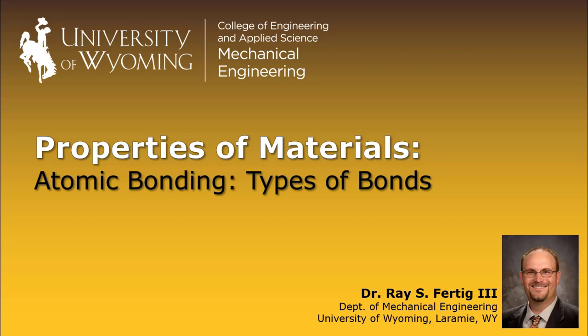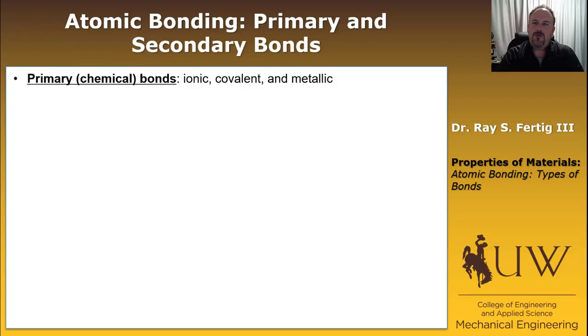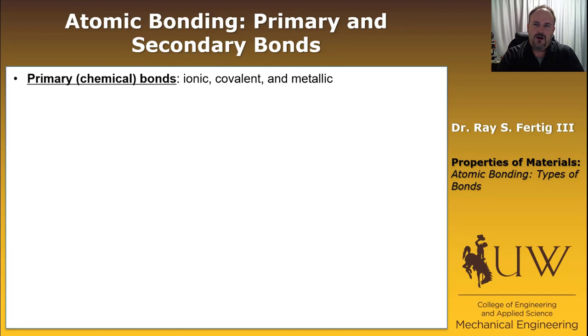In this lecture, we want to give a brief introduction to the types of atomic bonding that occur. We're going to cover ionic, covalent, metallic, and secondary bonds. We'll begin by breaking the bonds into categories of primary and secondary bonds. Your primary bonds, sometimes called chemical bonds, are your ionic, covalent, and metallic bonds.